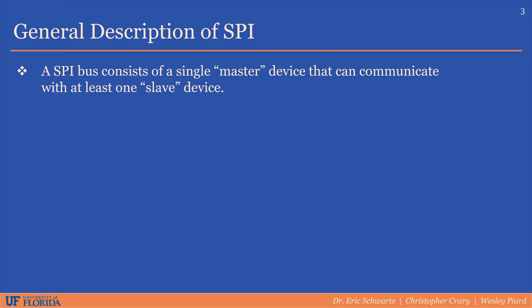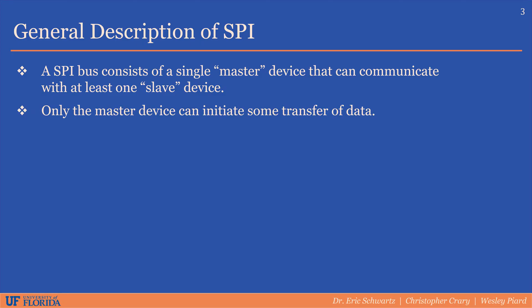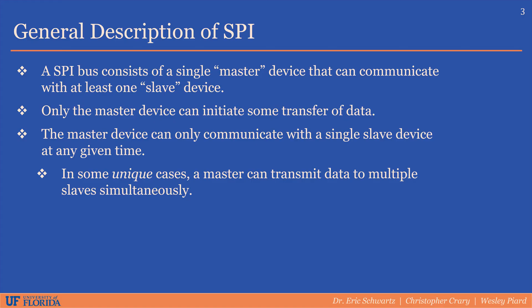Now let's talk about what an SPI bus actually looks like. It consists of a single master device that can communicate with at least one slave device. SPI does not have an imposed limit on the number of slave devices there can be on a single bus, but there are physical limitations that will be covered later. The master device is the only device permitted to initiate a data transmission, and slave devices can only output data when enabled or selected by the master.